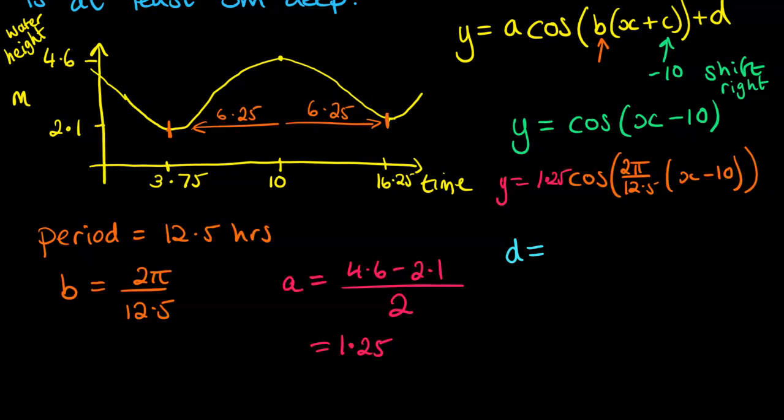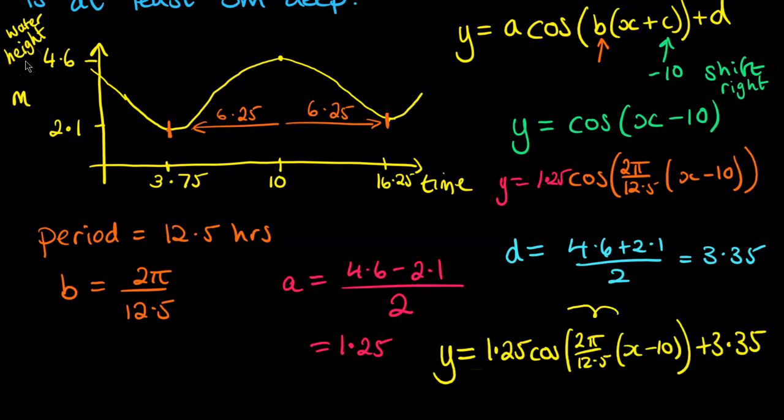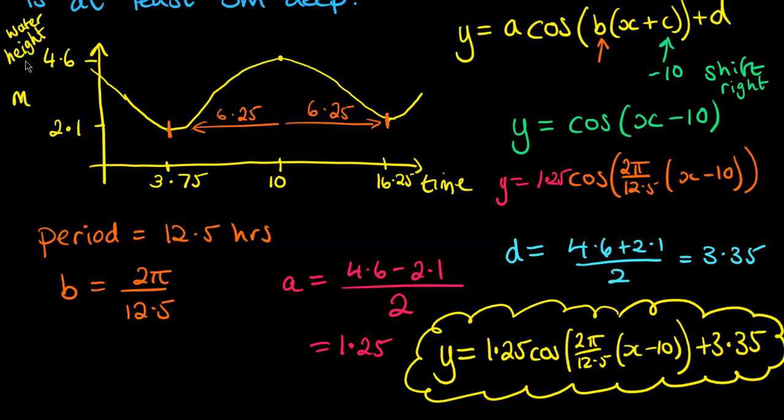So we've got d is 4.6 plus 2.1 over 2, giving us 3.35. And now we can put that as the last piece in our puzzle, and here is our final equation. Now my working on here is a bit messy, trying to squeeze this all onto one screen for you. Please do it in a nice set out order for your teacher to be able to mark it easily, or the examiner.